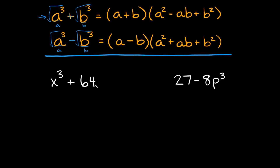So here we have x cubed plus 64. The first thing I realize is that I have two perfect cubed numbers here. That means I can use one of these formulas to factor it, and since we're adding, we're going to use this first one up here where there's addition. The first thing you want to do is just take the cube root of each of these.